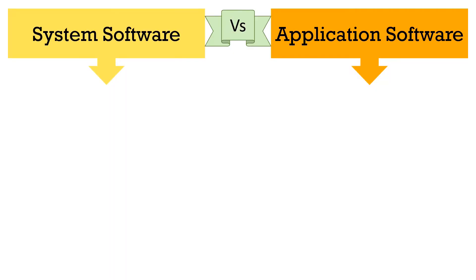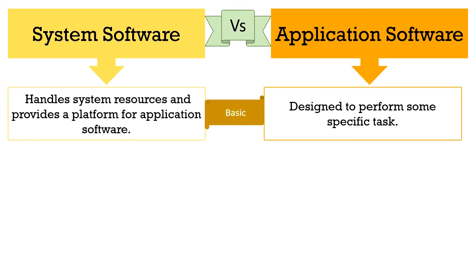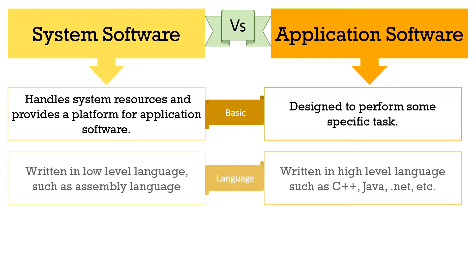Knowing both the terms — system software and application software — let us discuss the differences between them. The system software is designed to manage system resources like memory management, process management, protection, security, etc., and also provides a platform for application software to run. On the other hand, application software is designed to meet the user requirement for performing some specific task. System software is written in a low-level language like assembly language, whereas application software is written in a high-level language such as Java, C++, .NET, VB, etc.